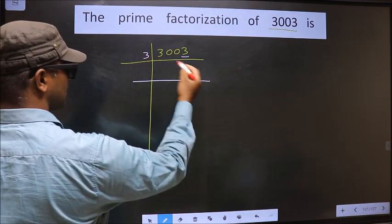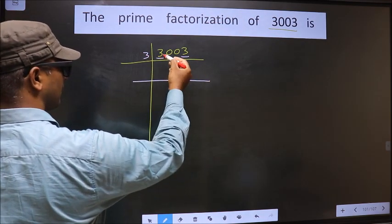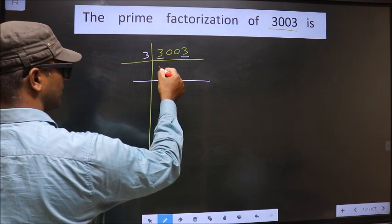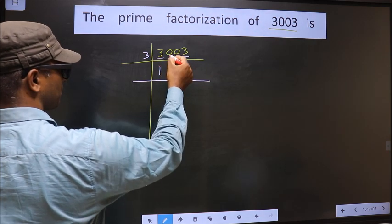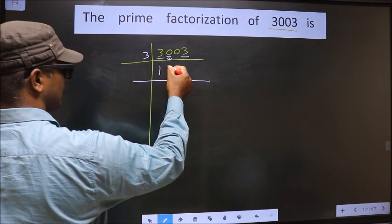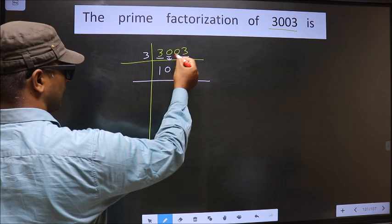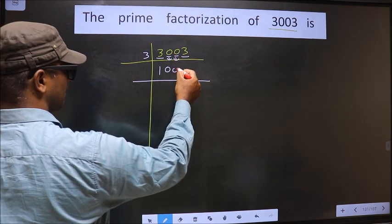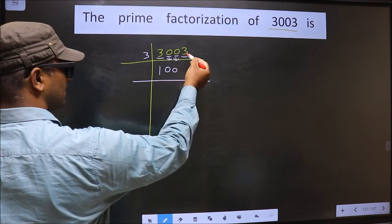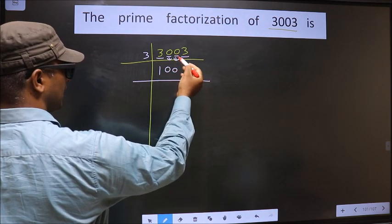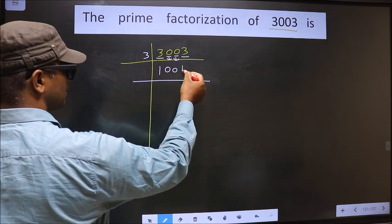The first number is 3. When do we get 3 in the 3 table? 3 once is 3. Next number 0 as it is, next number 0 as it is, next number 3. When do we get 3 in the 3 table? 3 once is 3.